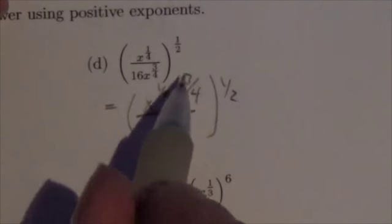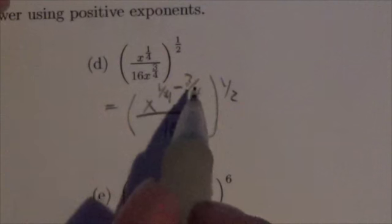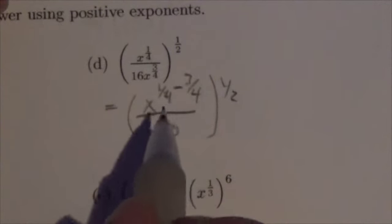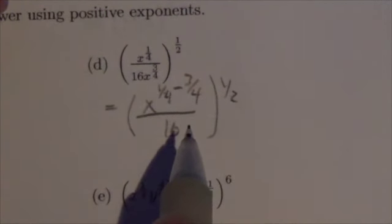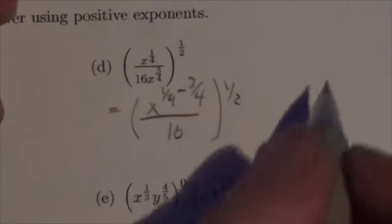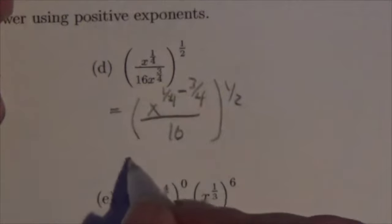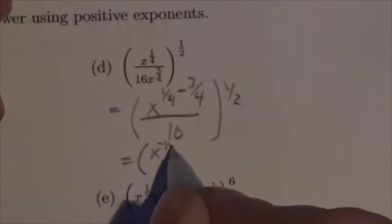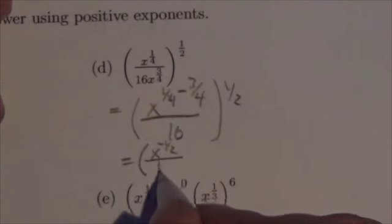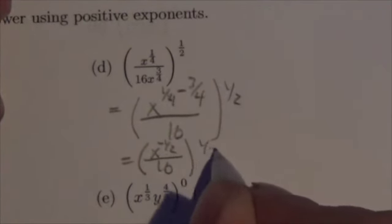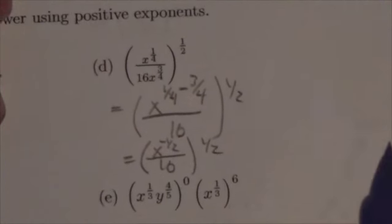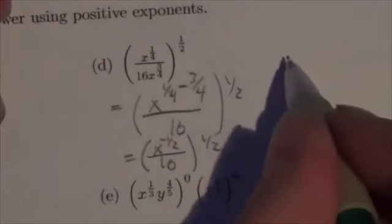Let's just take a look at this. 1 quarter minus 3 quarters. Well, 1 minus 3. Okay, we've already got a common denominator. 1 minus 3 is going to be negative 2. Negative 2 over 4 is just going to be to the negative 1 half. So this is going to end up being x to the negative 1 half over 16, all to the 1 half. Okay, now that's getting a little cramped in here. So let's come up here.